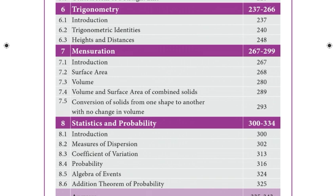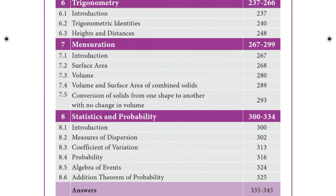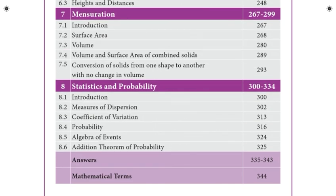The seventh unit covers Volume and Surface Area. The eighth unit is Statistics and Probability, including measures of central tendency.